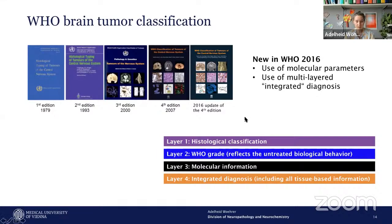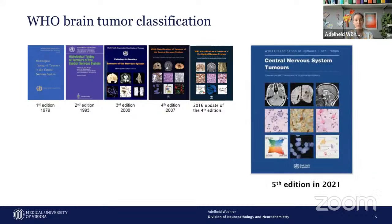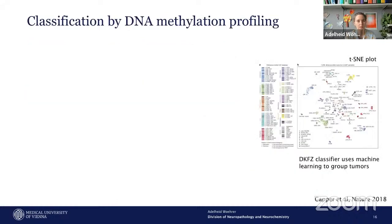This led to the introduction of molecular testing and the concept of layered diagnosis in the 2016 update of the WHO classification — for the first time using histology plus WHO grade plus molecular information, resulting in an integrated diagnosis. In 2021, this continued further with even more advanced profiling methods, most importantly the broader introduction of DNA methylation profiling.